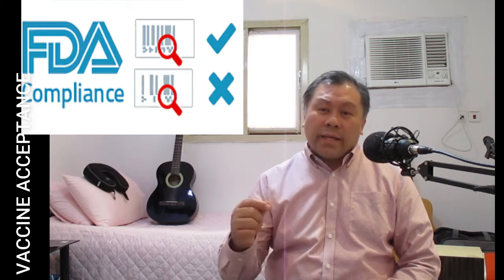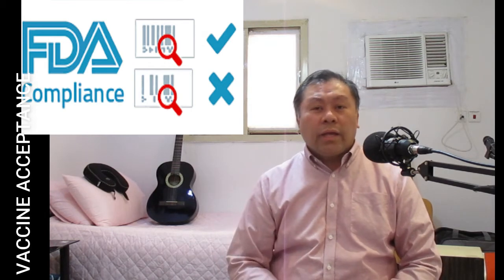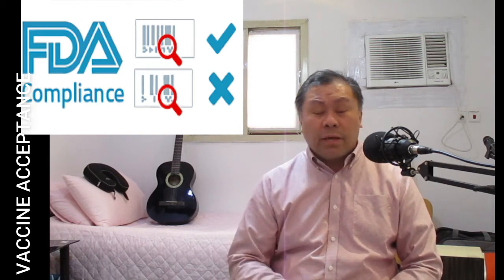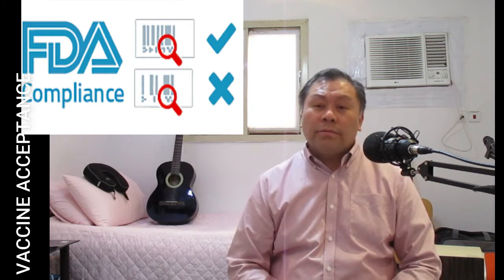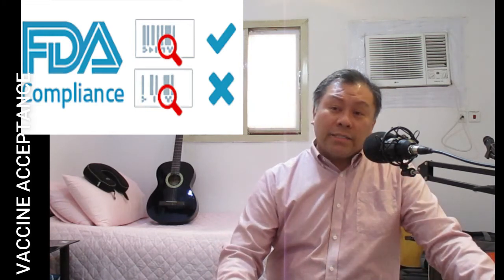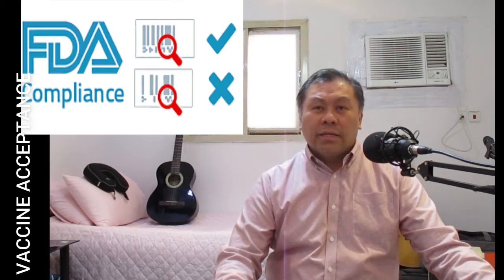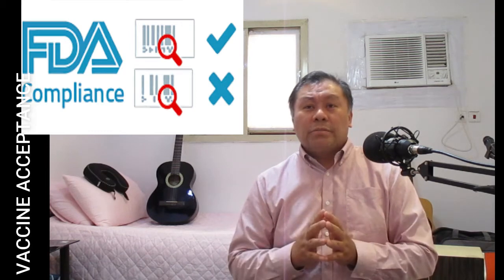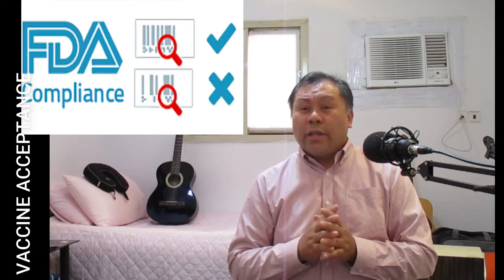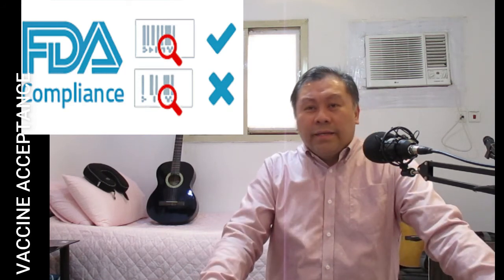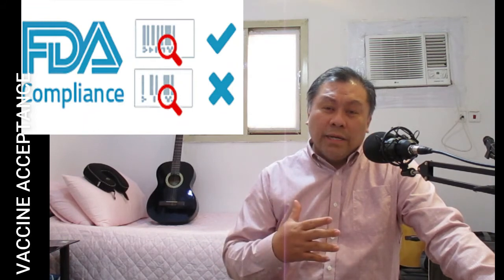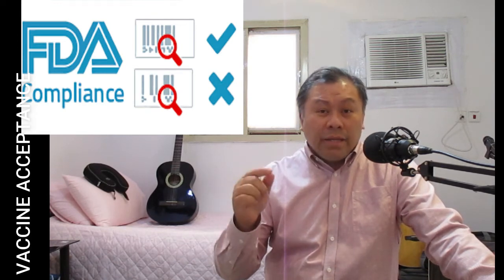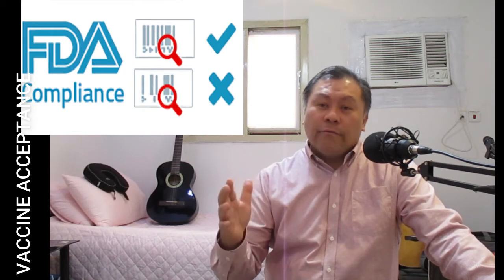FDA approval takes a process that can range from one week up to eight months, depending on whether you are registering or submitting a pre-market approval (PMA) application. Bringing a medical device to market is not a fast process. Drug manufacturers must conduct laboratory, animal, and human clinical testing and submit their data to the FDA. The FDA then reviews the data and approves the drug if the agency's objective determination finds that the benefits of the drug outweigh the risks for the intended use.